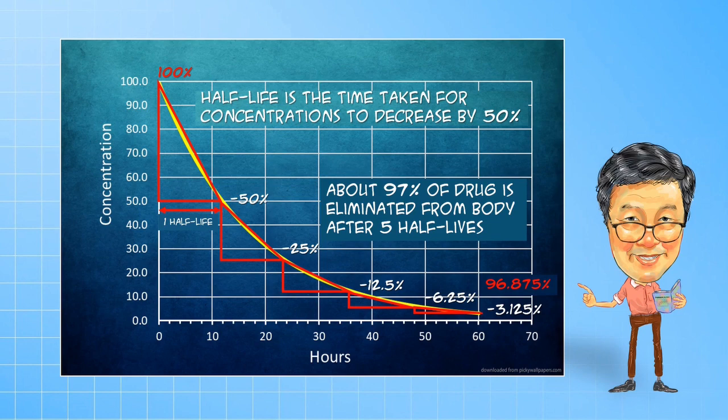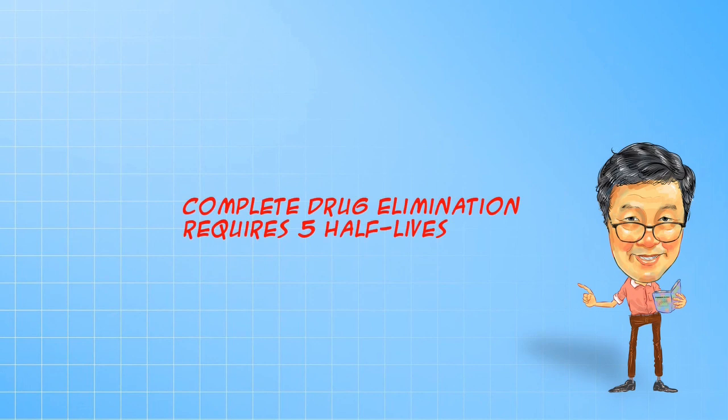Approximately 97% of the administered dose is lost by the end of 5 half-lives. We can conveniently round it up to say complete drug elimination requires 5 half-lives.